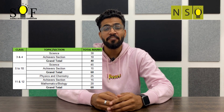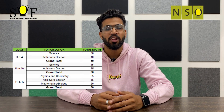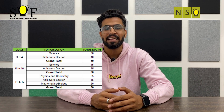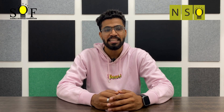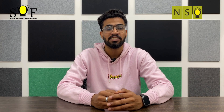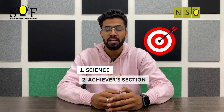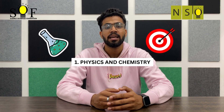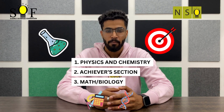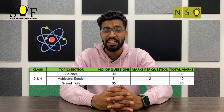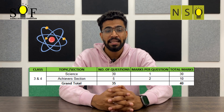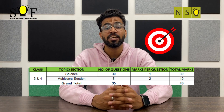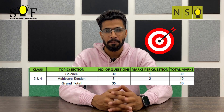At the end, SF NSO. SF NSO is also going to have a total of 40 marks for classes 3 and 4, whereas 60 marks for classes 5 to 10 and 11 and 12. These marks will be divided into two sections for classes 3 and 4 and classes 5 to 10, which are Science and Achievers section, whereas three sections for classes 11 and 12: Physics, Chemistry, Achievers section, and Maths or Biology. For classes 3 and 4, Science section will have 30 questions carrying 1 mark each, totalling 30 marks. Achievers section will have 5 questions carrying 2 marks each, totalling 10 marks.